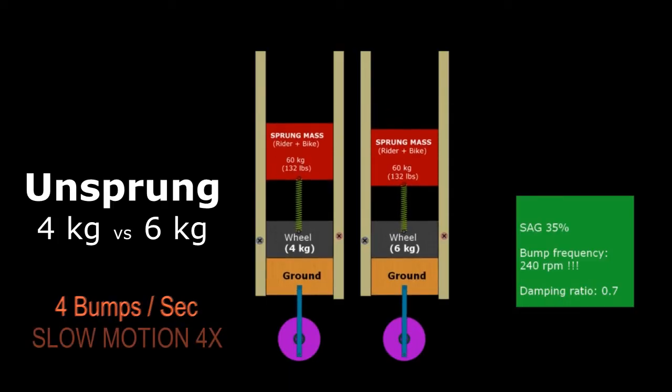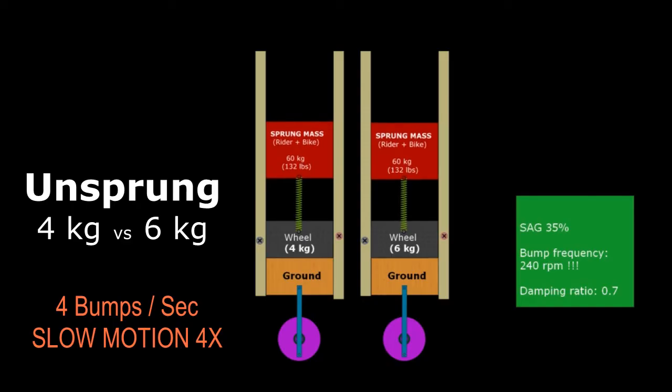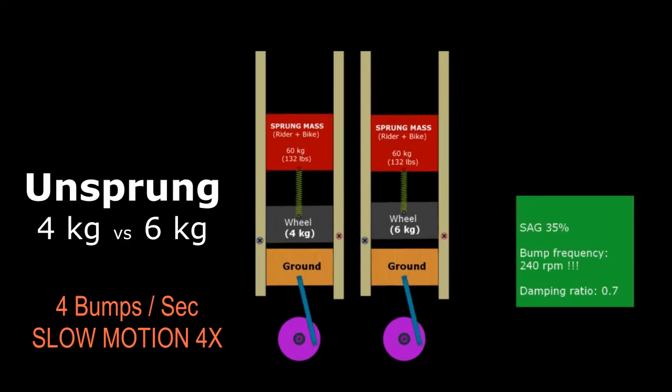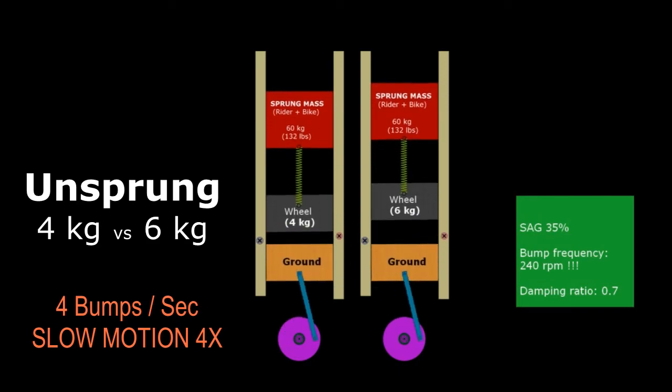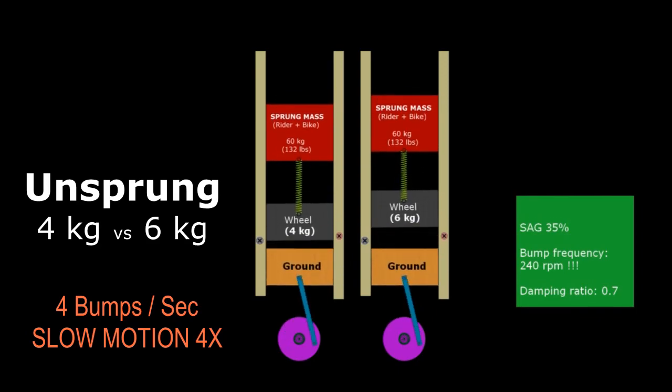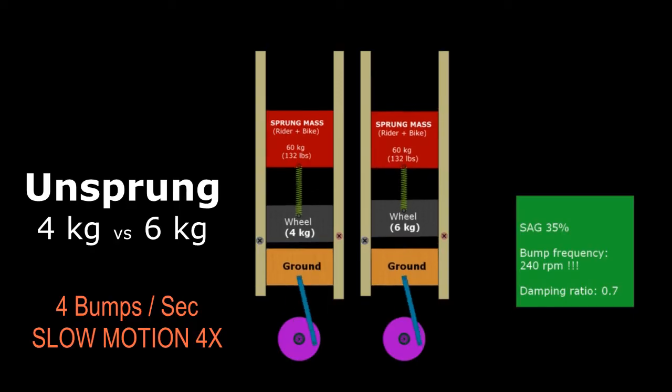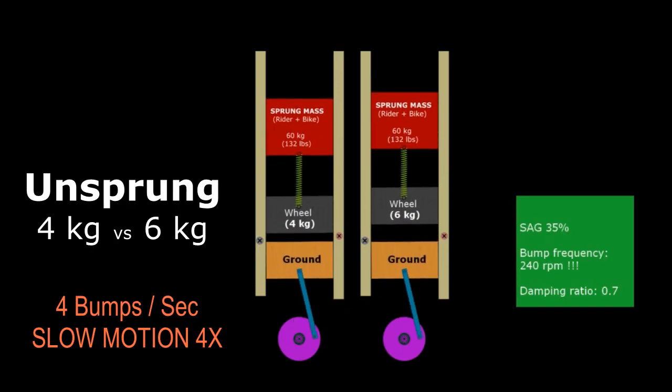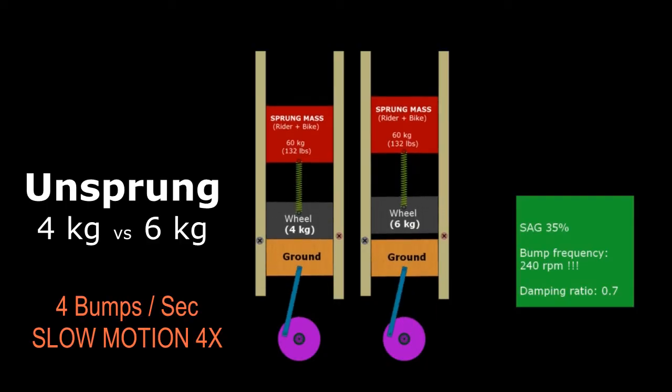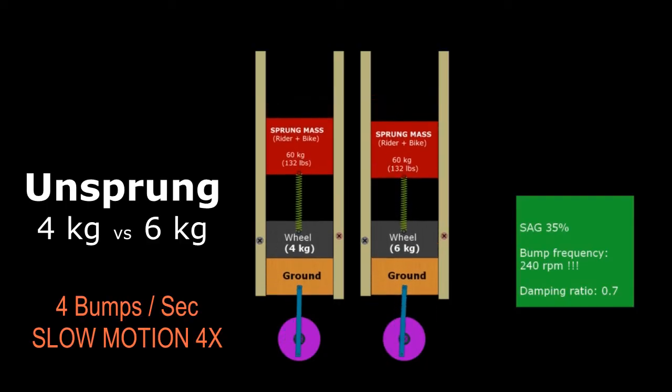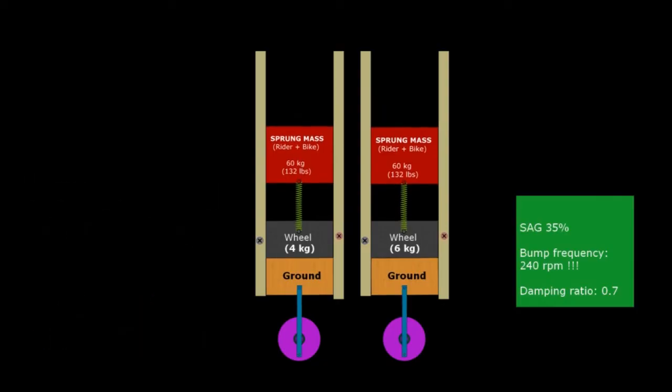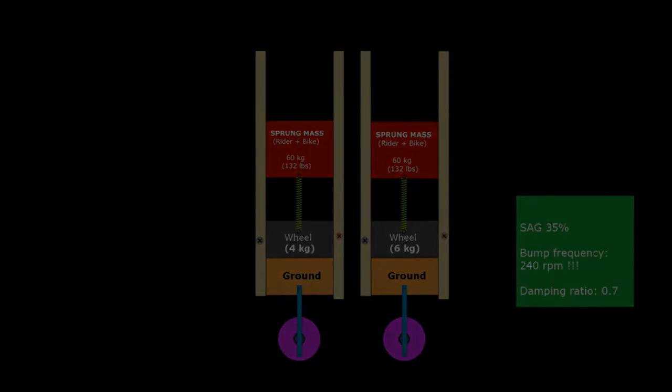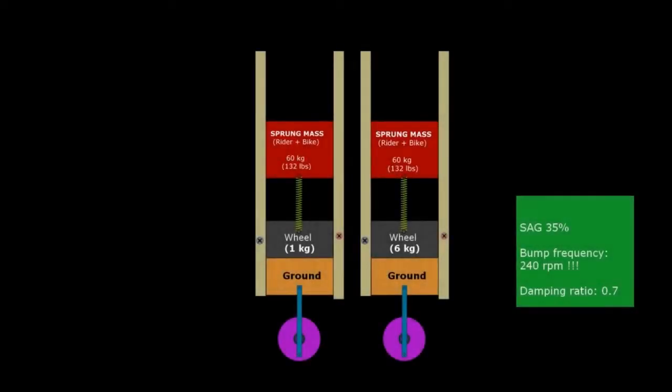It's very hard to see because it's very fast, but we can now see some difference. I'm going to play again the simulation but at a slower motion, four times slower motion. And as you can see, we can now see a difference between the 4 and the 6 kilogram unsprung mass. Okay, the 4 kilogram one performs better than the 6 kilogram one at high frequency bumps. This is very cool.